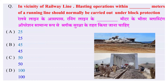In the vicinity of a railway line, blasting operations within how much meters of a running line should normally be carried out under block protection? Railway line के आसपास, running line के कितने meter के भीतर blasting operation सामान्य रूप से block सुरक्षा के तहत किया जाना चाहिए? Options: 25 meter, 45 meter, 50 meter, या 100 meter — और सही जवाब है 100 meter।